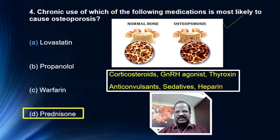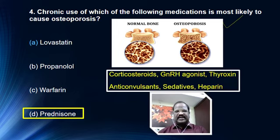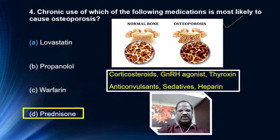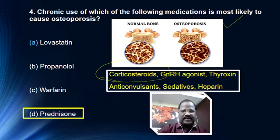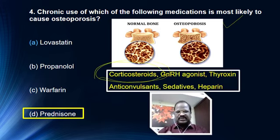These drugs generally cause the side effect of osteoporosis. Among all, the most common drug causing osteoporosis — think of corticosteroid. Corticosteroids are the most common drug causing osteoporosis.